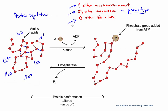The last mechanism of regulation is altering structure. A simple version is taking a precursor protein, cutting a piece of it off, and ending up with an active protein. Another really common example is phosphorylation, which occurs through a group of enzymes called kinases.